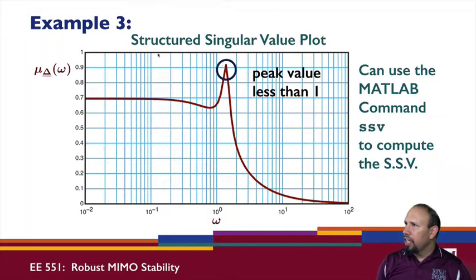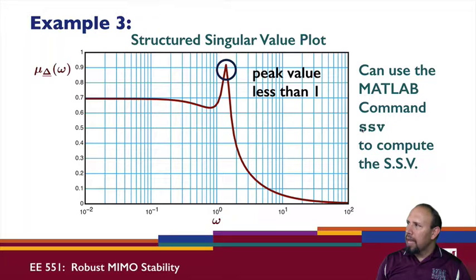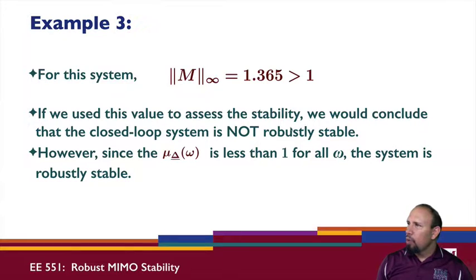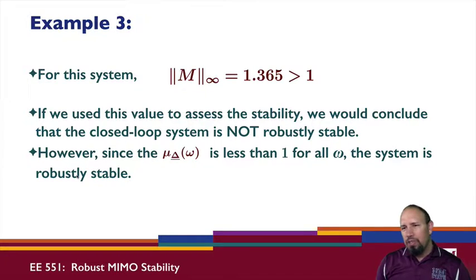The peak value of mu is less than one, so the structured singular value condition is satisfied and the system is robustly stable. We can also use the MATLAB command 'ssv' to compute the structured singular value. For comparison, the H-infinity norm of M is 1.3 — strictly greater than one — which would incorrectly suggest the system is not robustly stable. But because the uncertainty is diagonal and mu < 1, we correctly conclude robust stability.